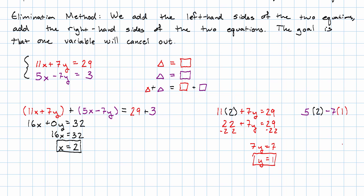If we want to check our work, we can say, what happens if we take 5 times 2 minus 7 times 1? That will be 10 minus 7, which is indeed 3. So, that's what's actually happening when we use the elimination method.